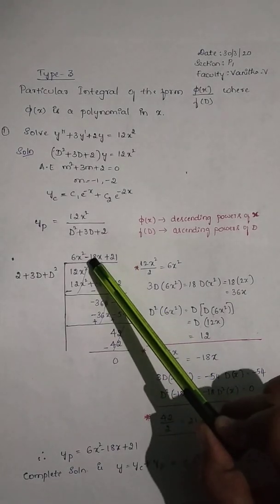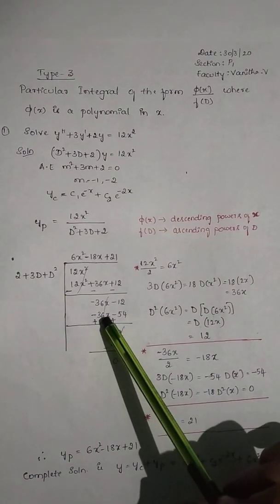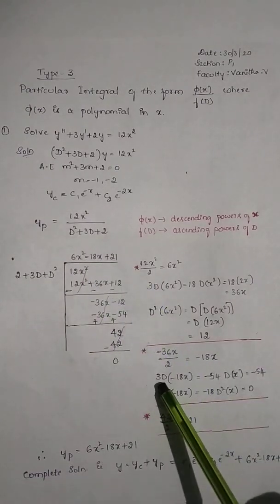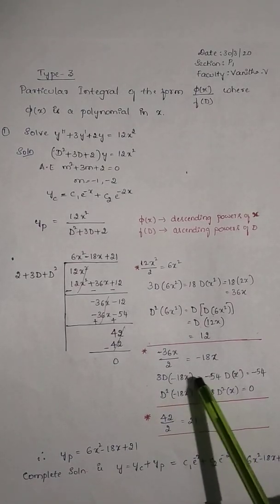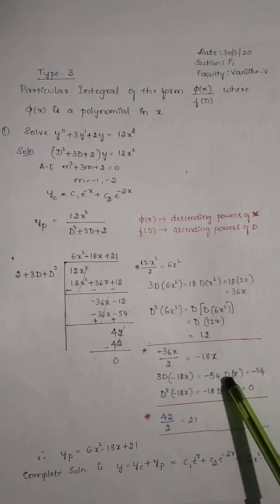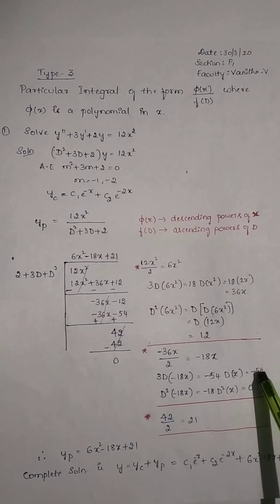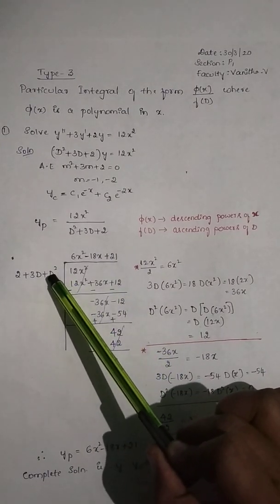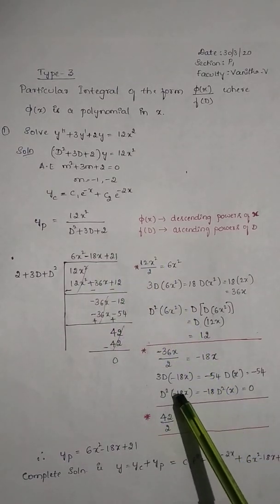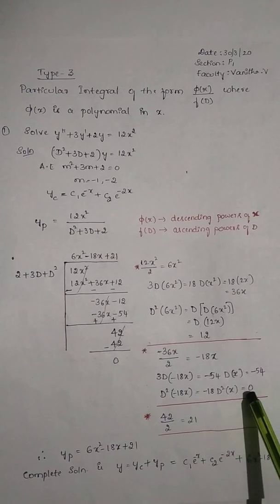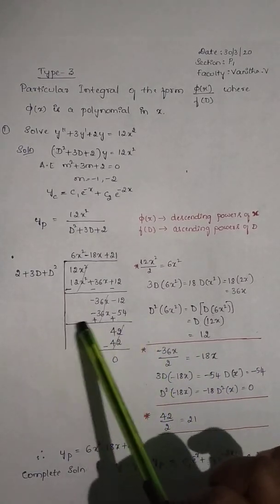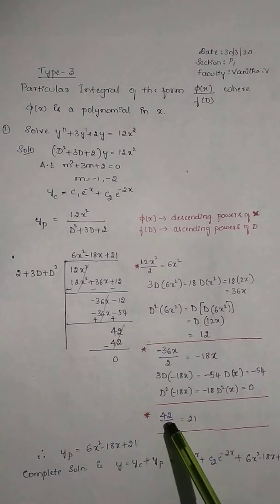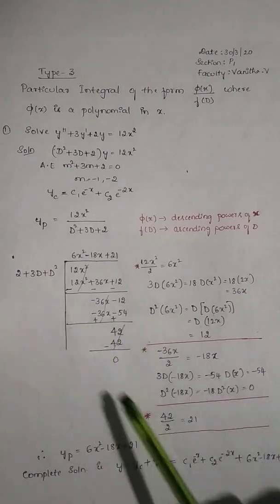−18x × 2 = −36x — write in the fourth line. Then 3D of −18x: −18 × 3 = −54, and differentiation of x = 1, so the answer is −54 — write next to −36x. Then D² of −18x: double differentiation of x is 0, so that term is 0. Change the sign, cancel −36x, and the remainder is 42.